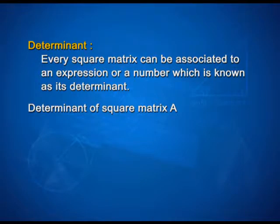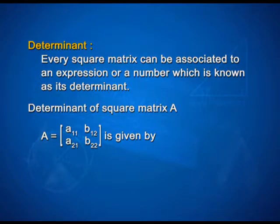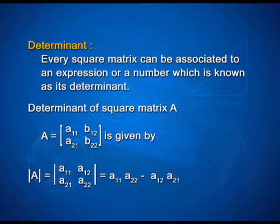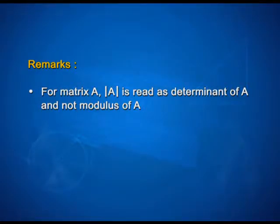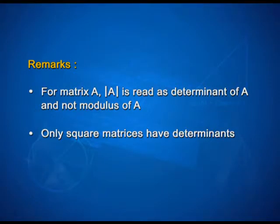The determinant of square matrix A = [A11 A12; A21 A22] is given by det(A) = A11*A22 minus A12*A21. Here are some important points you must remember. First, for matrix A, determinant A is read as 'determinant of A' and not 'modulus of A.' Second, only square matrices have determinants.